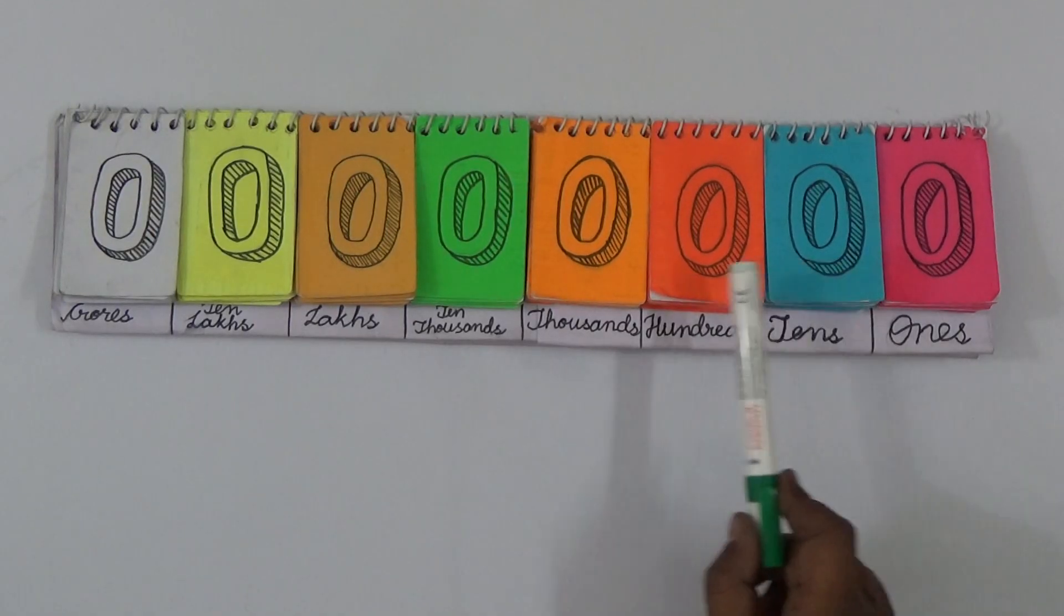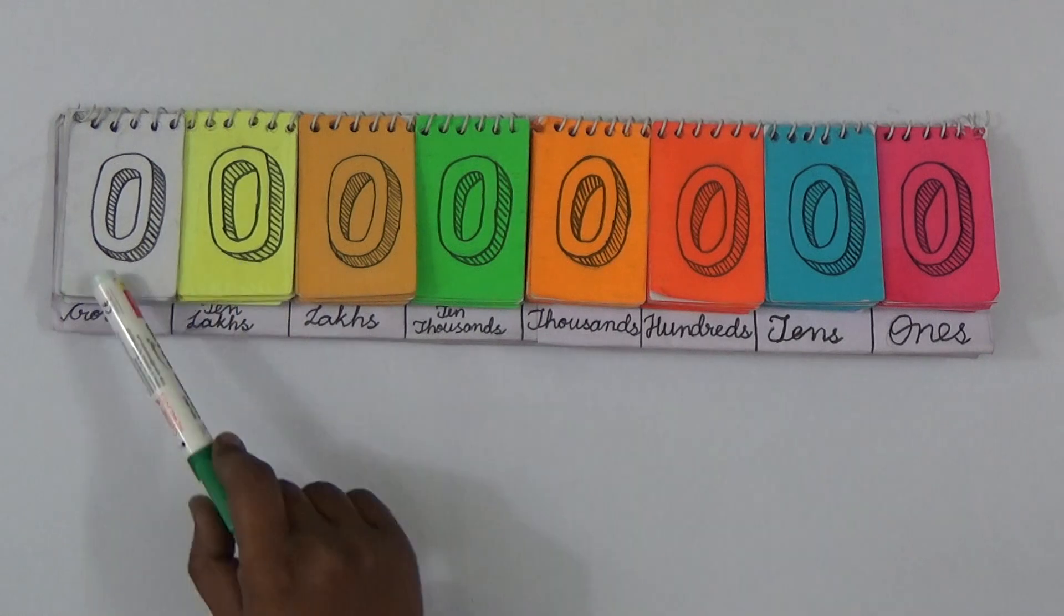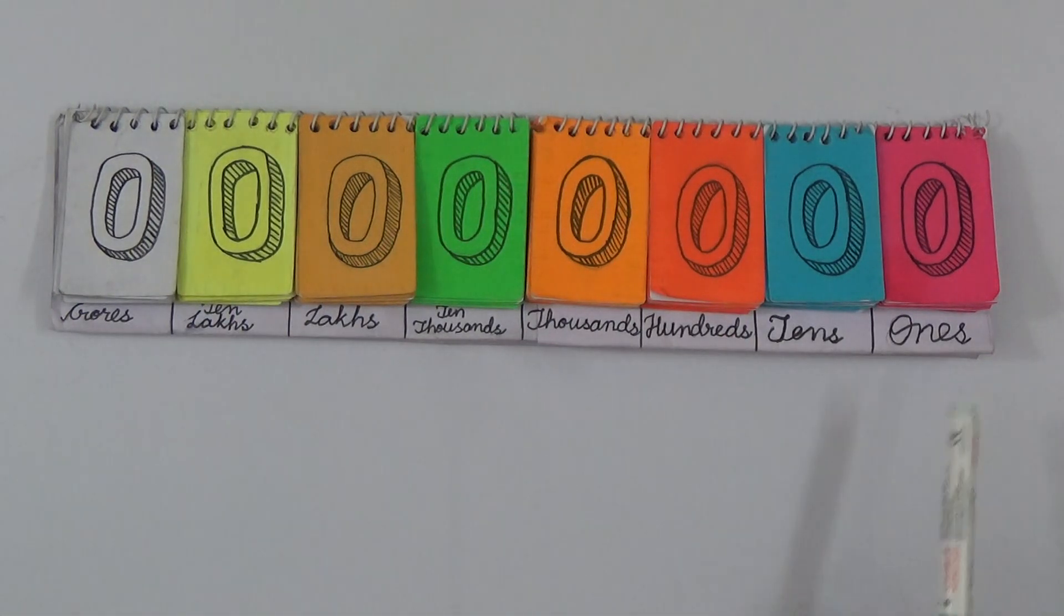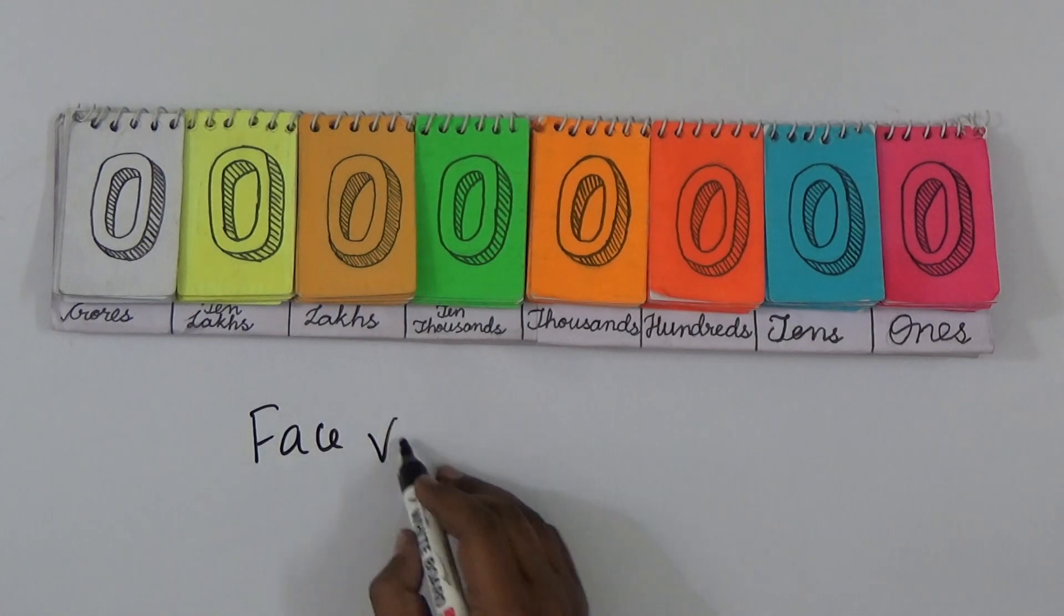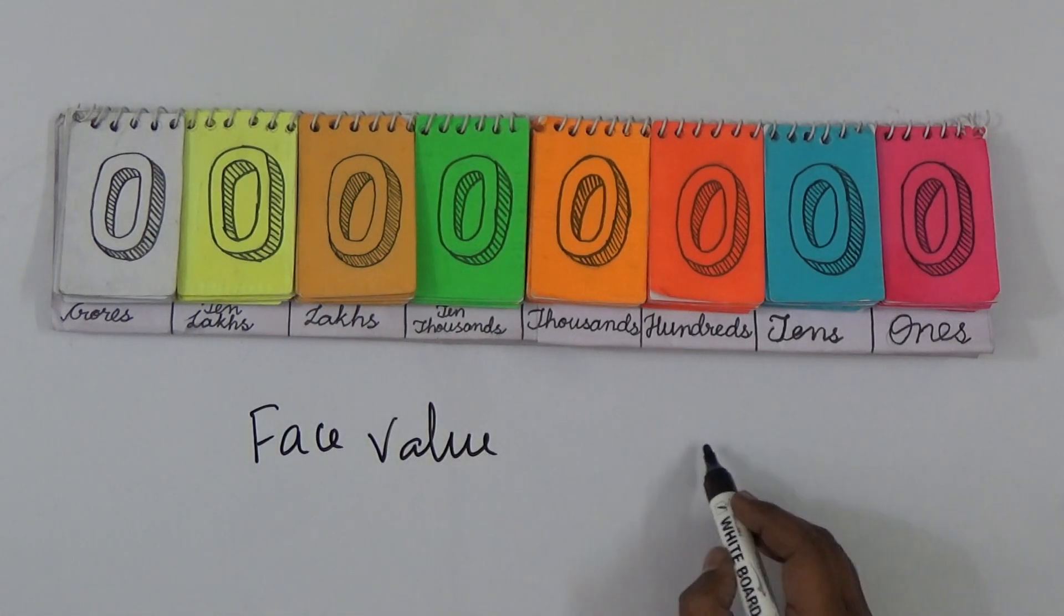I made this model only for eight digits. Every digit has a place name: ones, tens, hundreds, thousands, ten thousands, lakhs, ten lakhs, and crores. If you want to know the place value and face value, first of all we will see what is face value and place value.